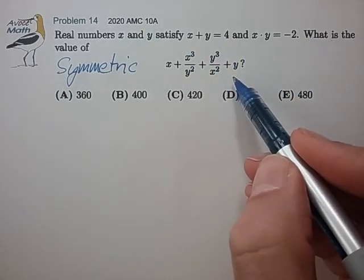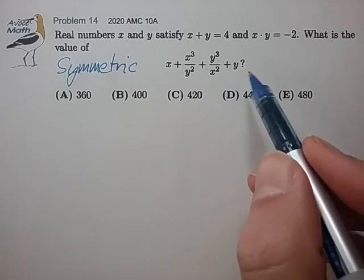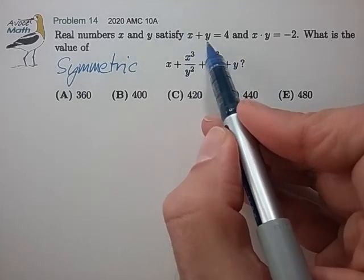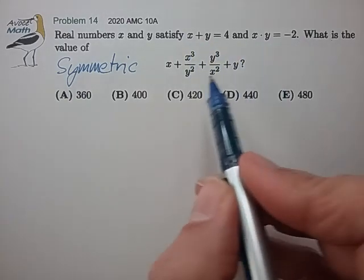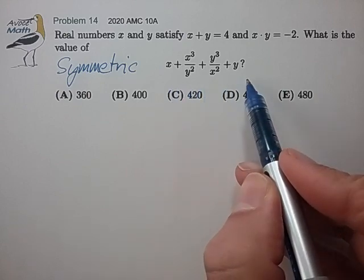So one way to attack these problems is to build up a little bit of ammunition of symmetric expressions from the given equations and then try to work backwards from the target expression.